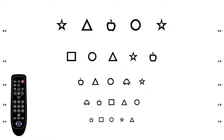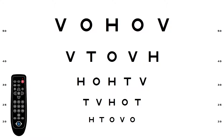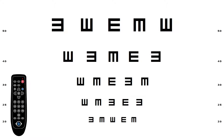Pressing the OptoType button again will change the OptoTypes to the HOTV chart. Pressing the OptoType button again will change the OptoTypes to Tumbling E. And finally, pressing the OptoType button again will change the OptoTypes back to standard letters.